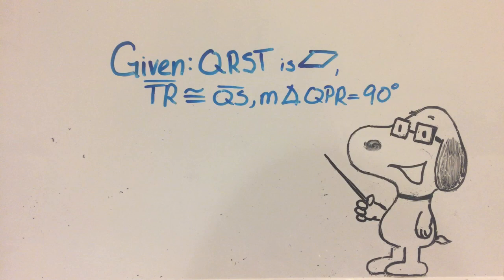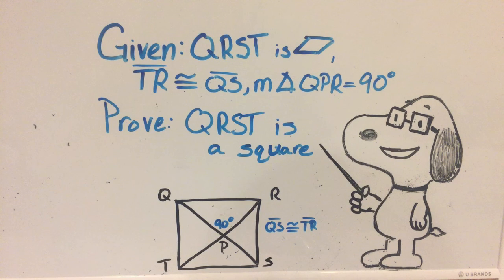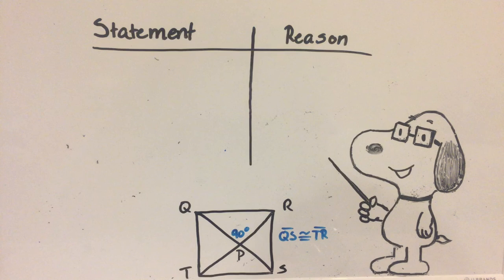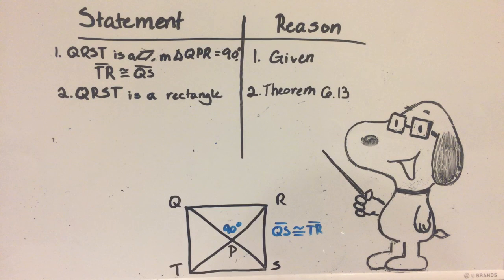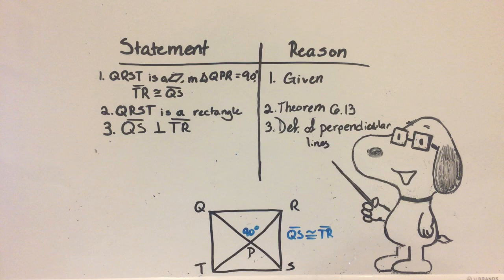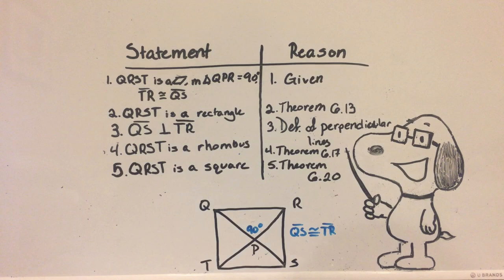Let's do an example. If we are given that QRST is a parallelogram, and TR is congruent to QS, and the measure of angle QPR is 90, then we should have a figure like this. Now we need to prove that QRST is a square using a two-column proof. First we write in the given. Now that we know the diagonals are congruent, we can state that the figure is a rectangle. We know that angle QPR is 90 degrees, so we can say that lines QS and TR are perpendicular, by the definition of perpendicular lines. Since the lines are perpendicular, we can say that the figure is also a rhombus. Now that we know the figure is both a rhombus and a rectangle, it is safe to say that it is a square.